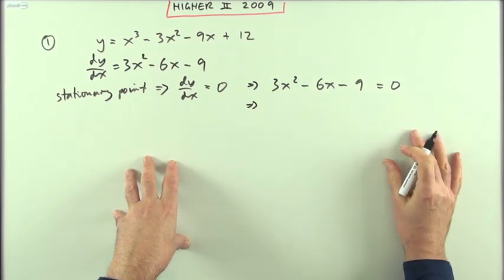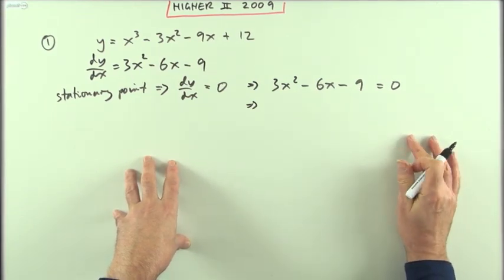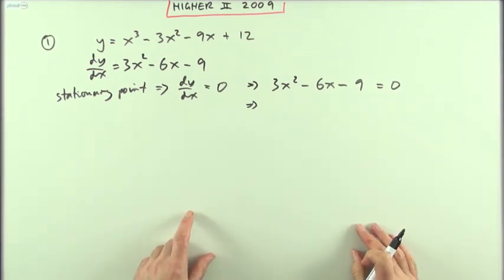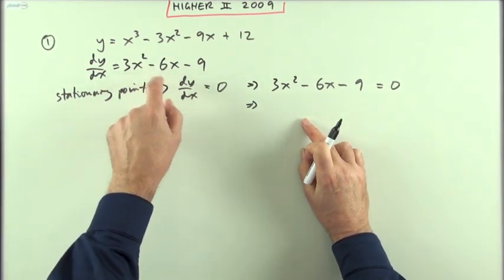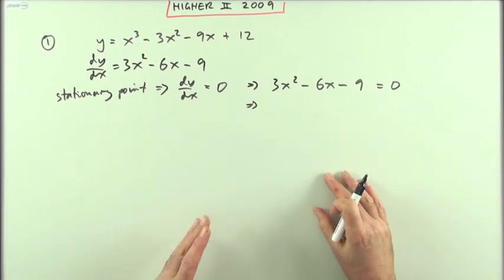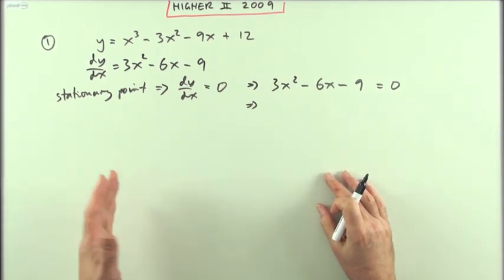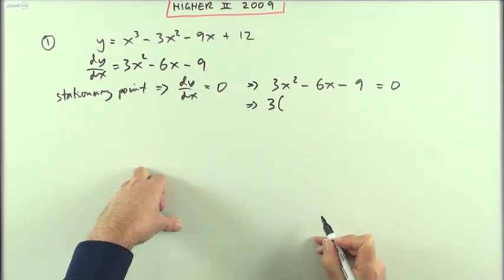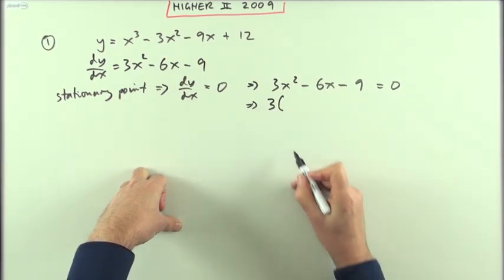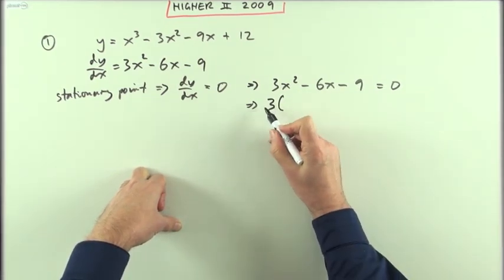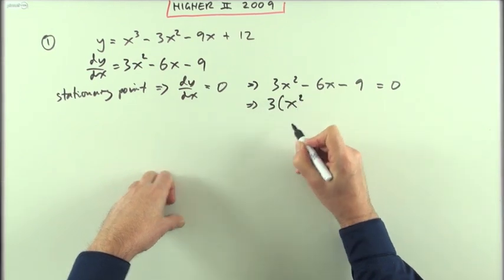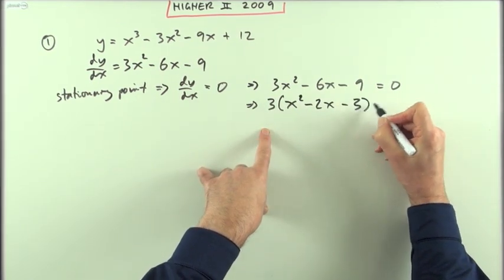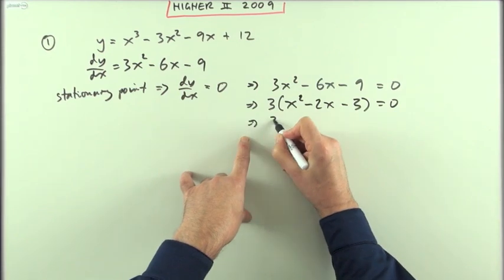Factorize that. First thing: take out the common factor of three. You could divide it out completely, and if I was only interested in the x-values that gave zero I would do that, but since I'm going to use this afterwards to evaluate whether the gradient is positive or negative, it's probably safer to leave the three in. So taking out the three: x² − 2x − 3 = 0.